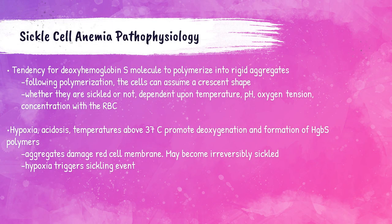Hemoglobin S has a tendency to polymerize into rigid aggregates, assuming a crescent shape. Hypoxia (reduced oxygen levels), acidosis (a decrease of pH in the blood), and temperatures above 37 degrees Celsius promote the deoxygenation and polymerization of hemoglobin S molecules. This polymerization into rigid aggregates damages the membrane of the red cell and may cause the cell to become irreversibly sickled.